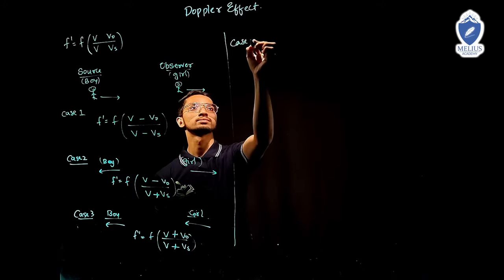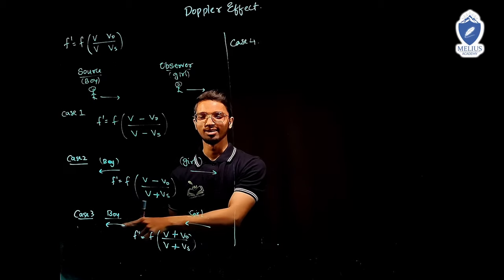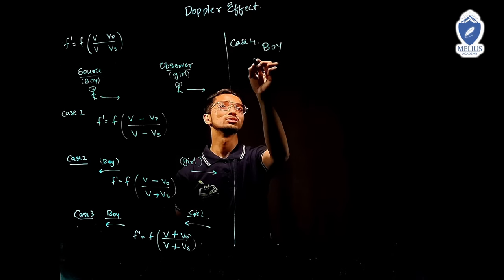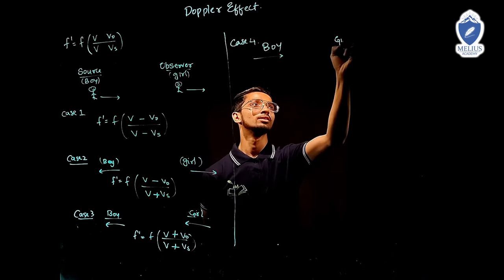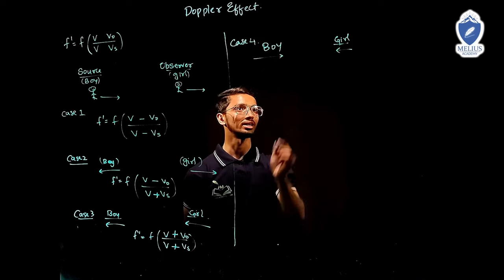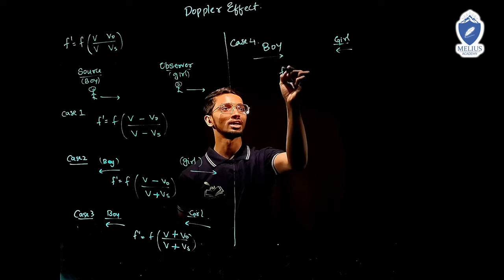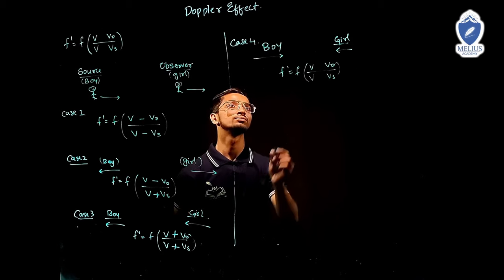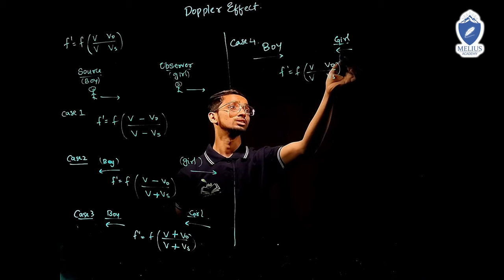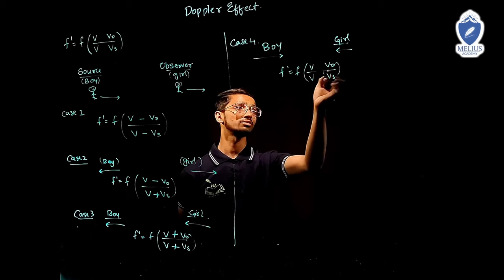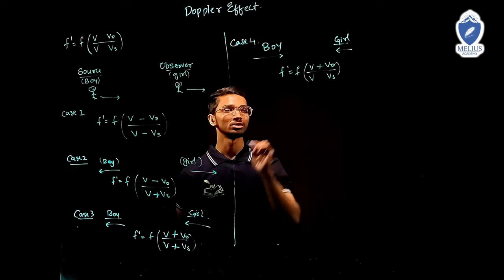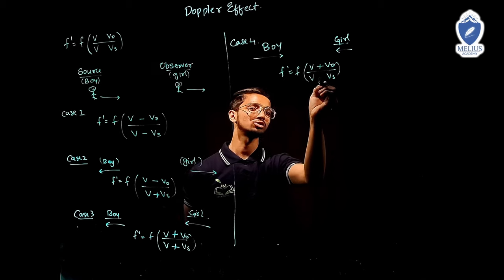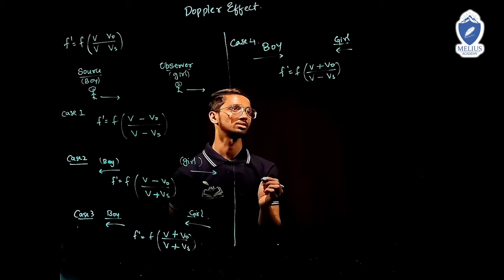Case 4: the boy comes back — now both are coming towards each other, both want to increase the frequency. The observer increasing frequency means the numerator increases — plus sign for V_O. The source also wants to increase the frequency; to increase frequency when source is in the denominator, the denominator should be decreased — so minus sign for V_S. Result: F' = F × (V + V_O) / (V − V_S).